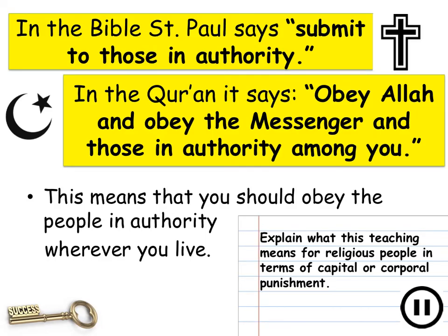The final key rules are really important for this topic. There are two here — one from Christianity, one from Islam. In the Bible, St Paul says submit to those in authority. In the Quran it says obey Allah, obey the messenger of Allah, and those in authority among you. In both cases it means that you should obey the people in authority wherever you live. Try to explain what this teaching means for religious people in terms of capital or corporal punishment.